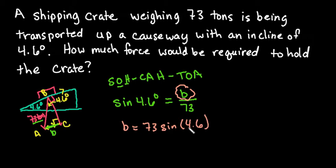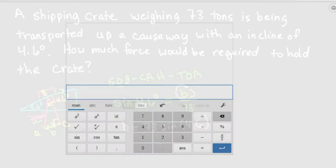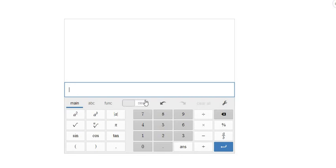Do make sure that you check that your calculator is in degree mode and not radian mode. So I'm just going to use a free online calculator. It does say that it's in degree mode. If it said radians, then it would be in radian mode. So for this particular calculator, it is Desmos.com, it's just a free scientific calculator. And you would just type in 73 times sine of 4.6.